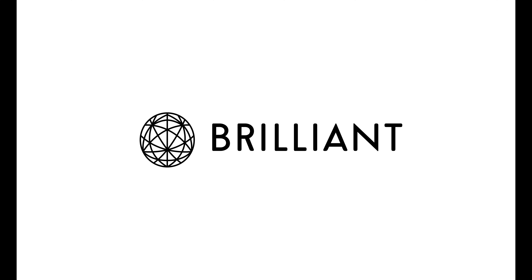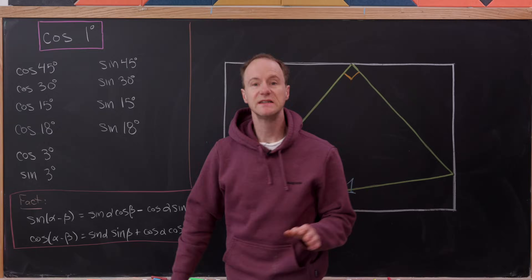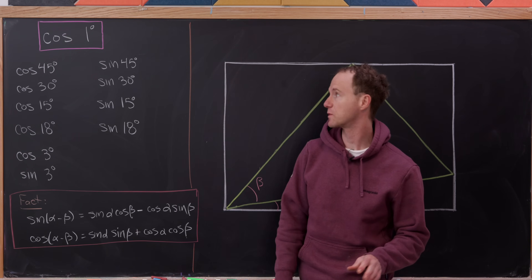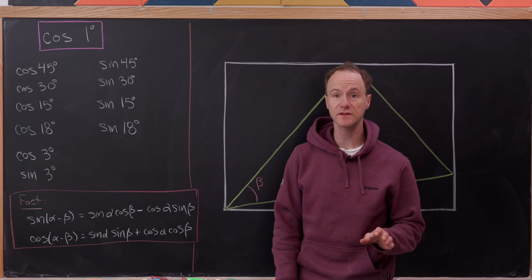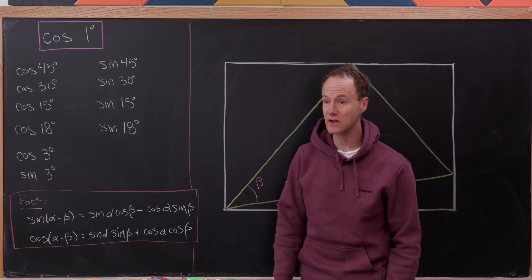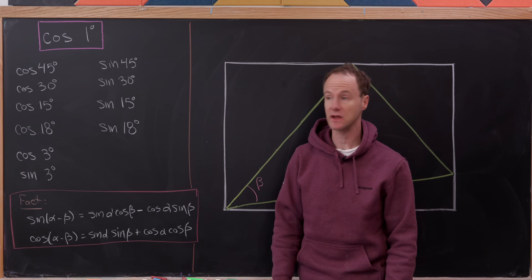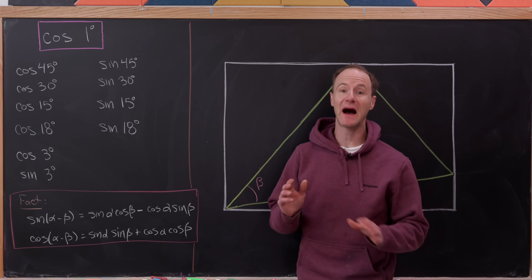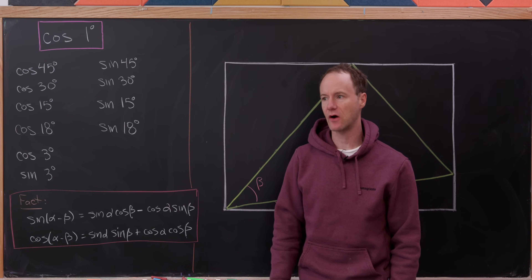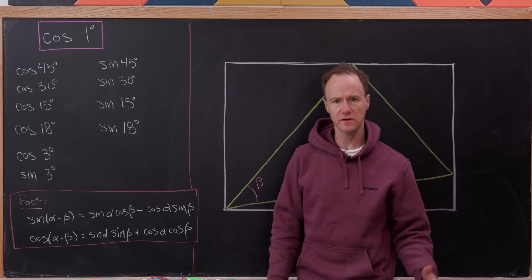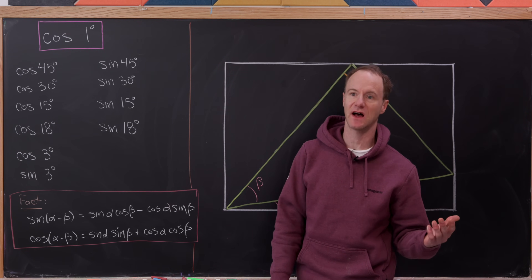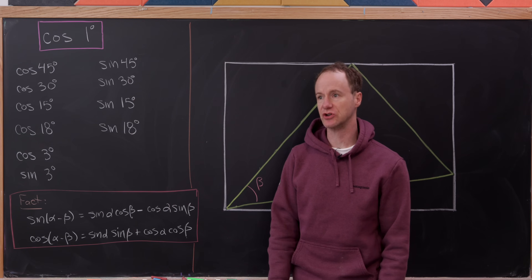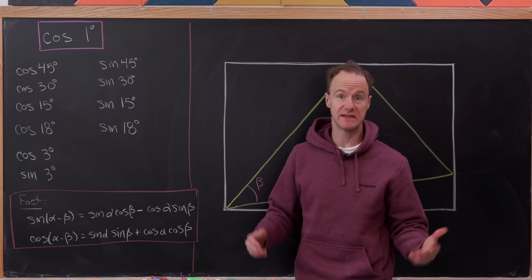Today's video is sponsored by Brilliant. We're going to derive a closed formula for the cosine of a single degree, and along the way we're going to calculate the cosine and the sine of several different degrees exactly.